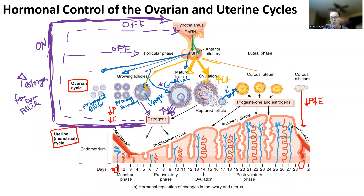LH is also going to target those follicle cells and create the corpus luteum. So around day 14 is ovulation. LH should essentially spike — estrogen spikes first, LH spikes next, and you have ovulation occurring.